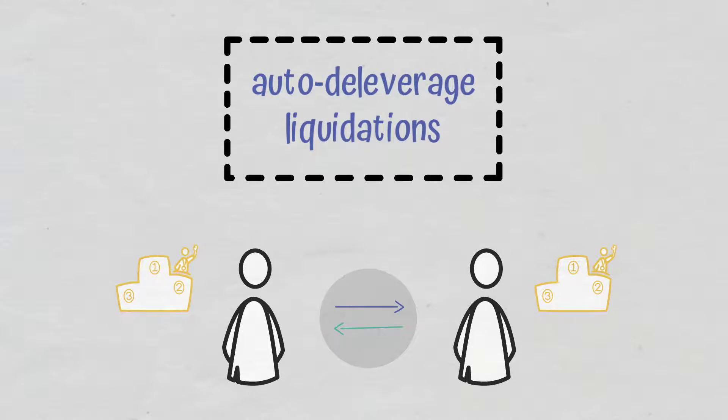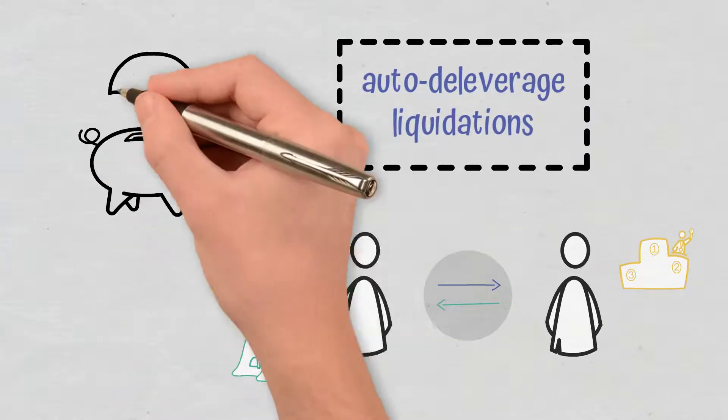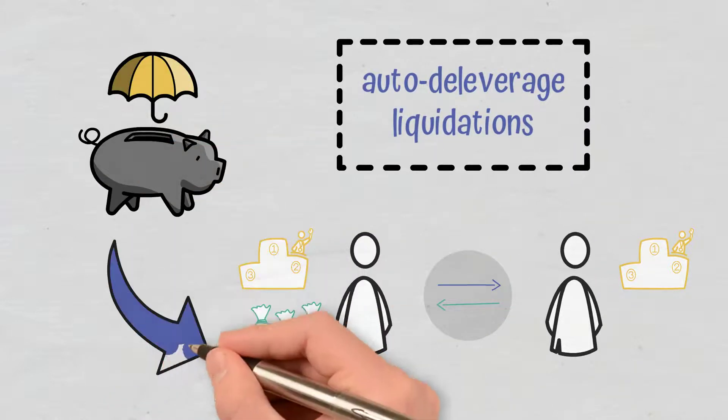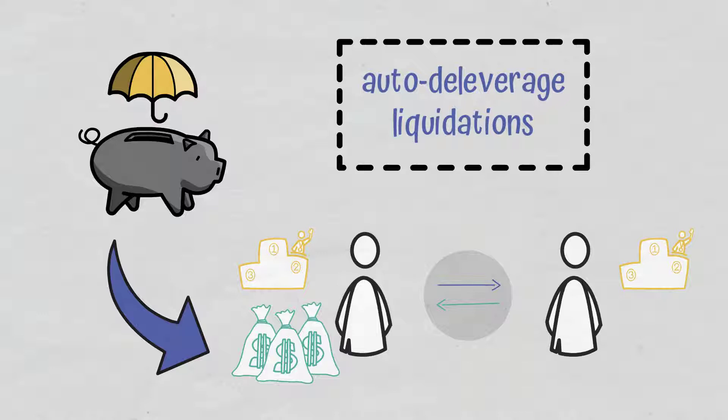In such a case, opposing profitable positions with high leverage have a great chance to receive counterparty liquidations. Here is where the insurance fund comes in, and it uses the collateral from fees of non-bankrupt users to cover the losses of bankrupt users.